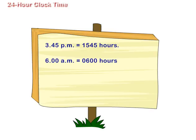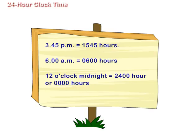6 o'clock in the morning or 6 a.m. is written as 0600. 12 o'clock midnight is called 0 hour and is written as 2400 hours or as 0000 hours.